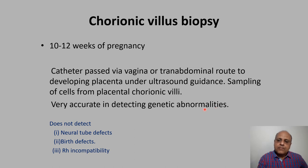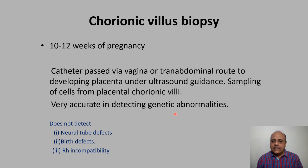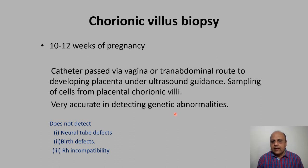These prenatal diagnostic techniques tell us about fetal well-being, and when there is a suspicion of chromosomal abnormality, amniocentesis or chorionic villus biopsy can be done. This helps the parents decide whether they want to continue the pregnancy or not if genetic abnormalities are found. If they want to keep the child, they prepare accordingly; if not, they can opt for abortion.